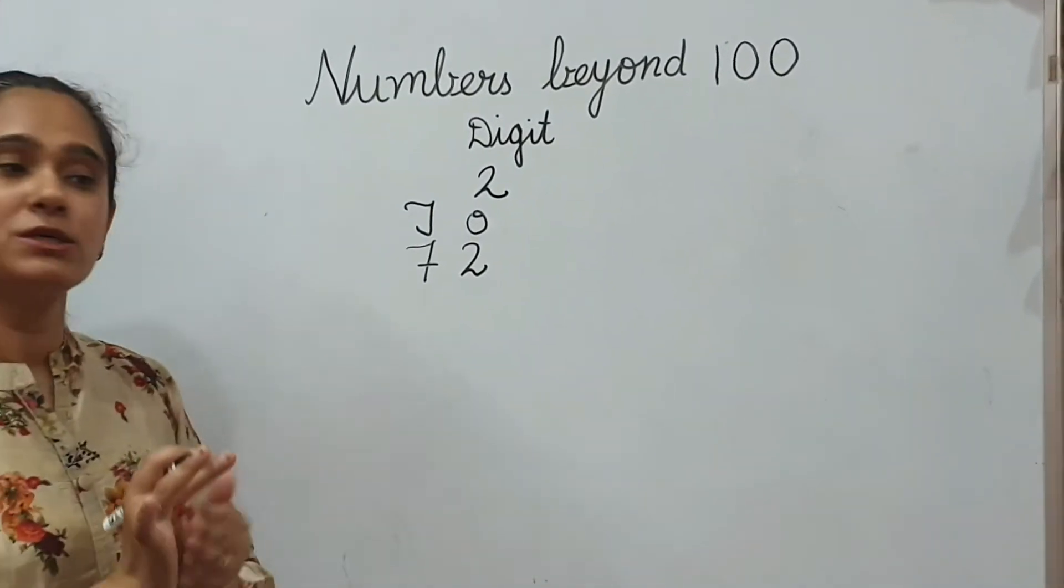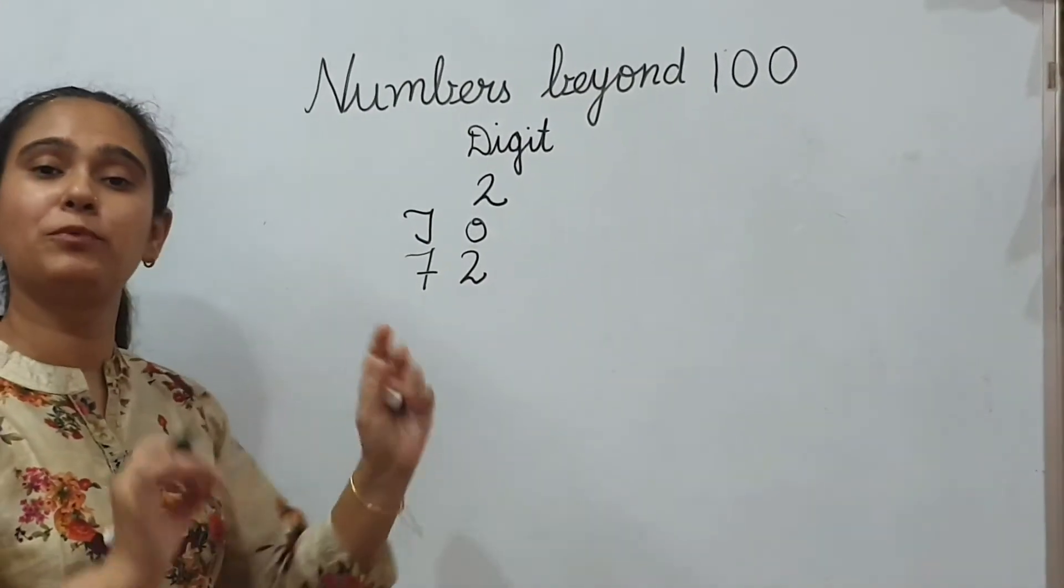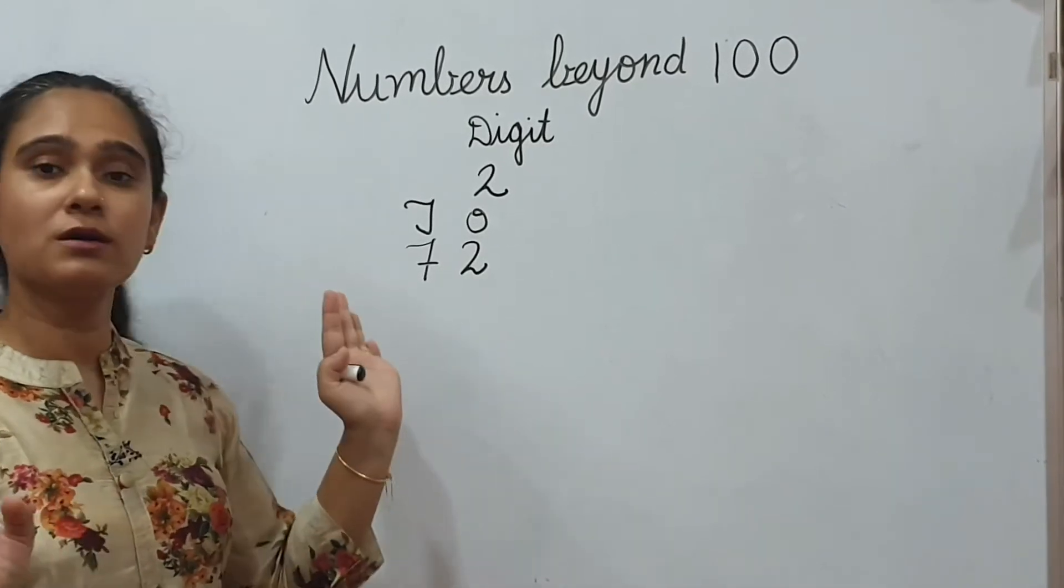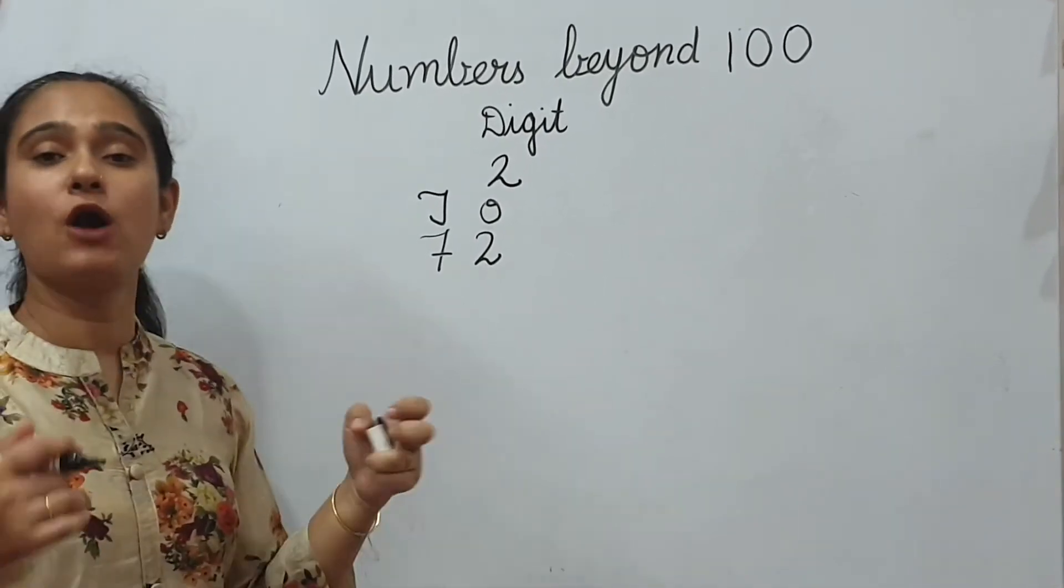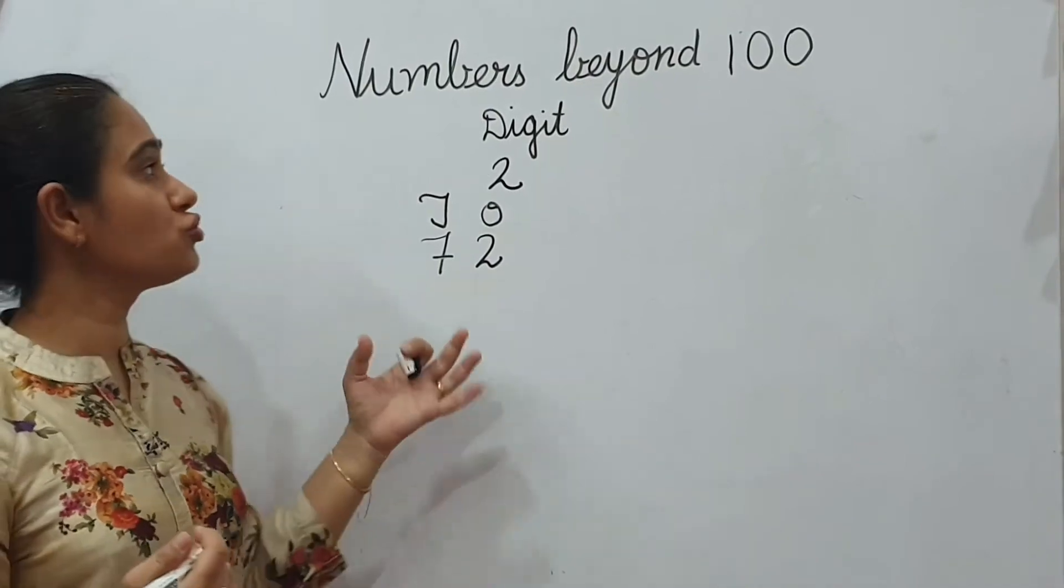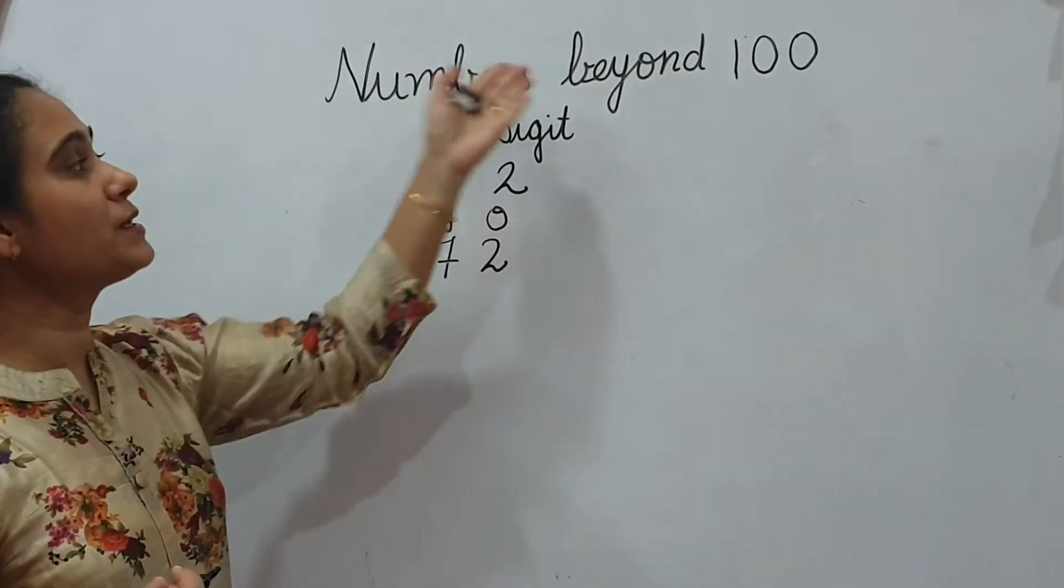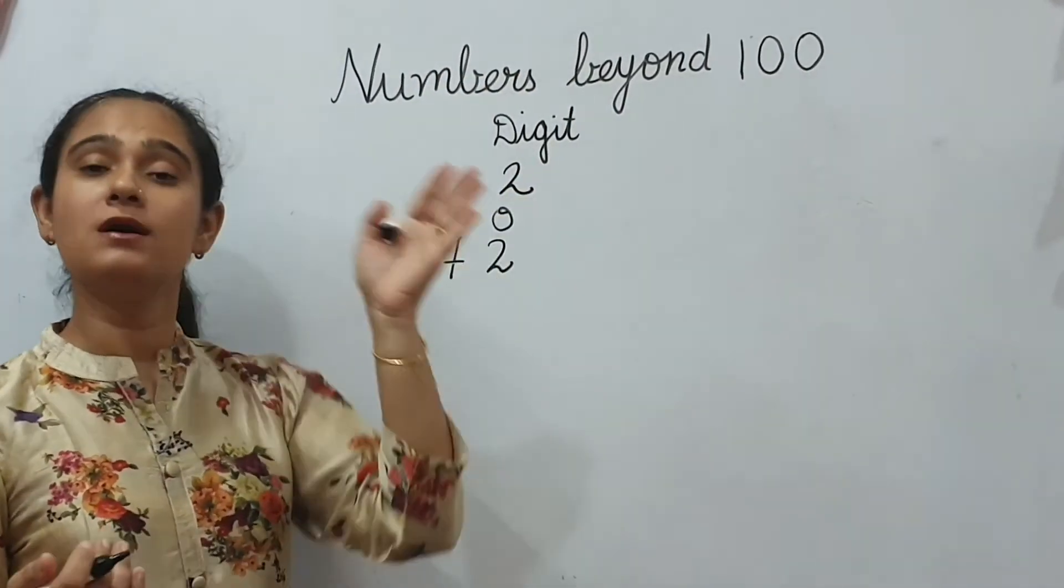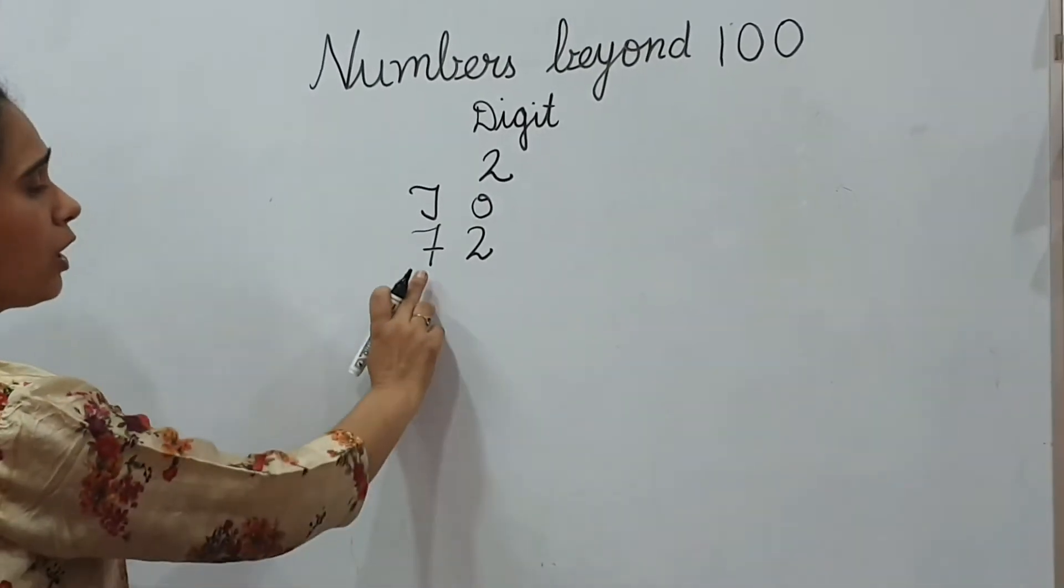Now, we have learnt about digit and number up to 100. We have learnt how to make the numbers, how to write the number names. Today, we will learn about numbers beyond 100, means 100 se bhi aage.